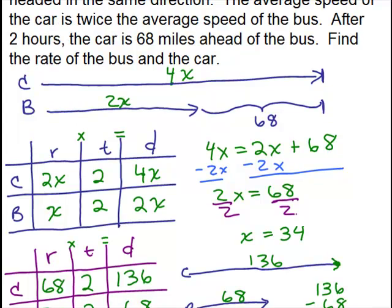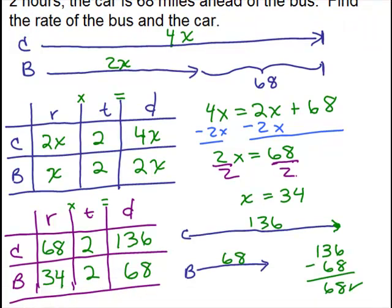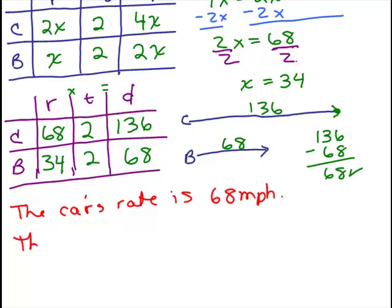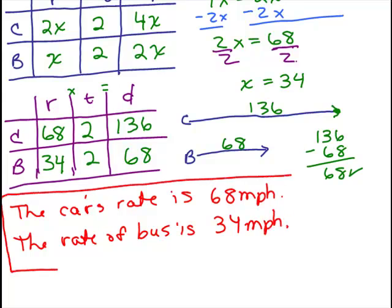Now I want to answer the question. Find the rate of the bus and the car. So now we look at this chart we filled out and it tells us the rates. So the rate of the car is 68. And we're talking in miles per hour. So this will be miles per hour and the bus's rate is 34 miles per hour. So the car's rate is 68 miles per hour. It seems reasonable for a car. And the rate of the bus is 34 miles per hour. Make sure you always answer the question. It might have asked you a totally different thing. But in this case, it did ask us for the rate. So that's how we finish the problem.